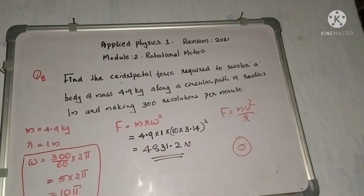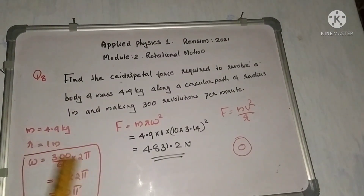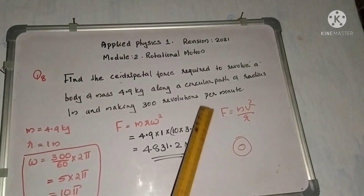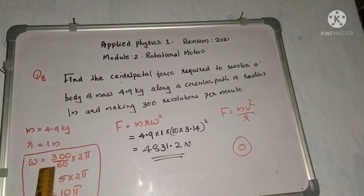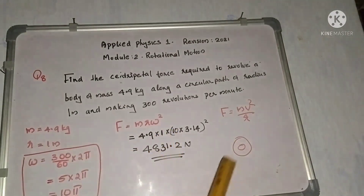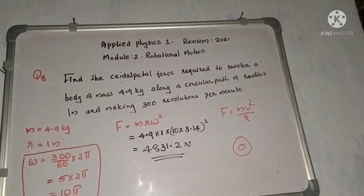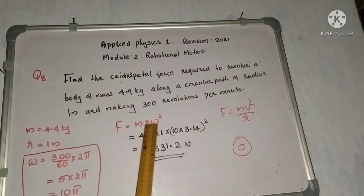Converting 300 revolutions per minute: 300 divided by 60 equals 5 revolutions per second. In 1 second, angular displacement is 5 × 2π = 10π radians. Therefore omega equals 10π radians per second.